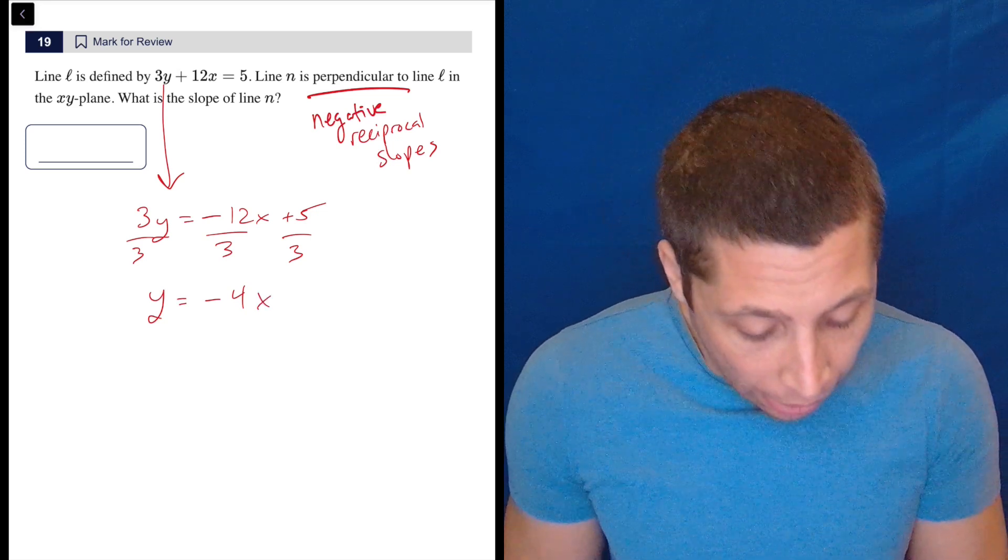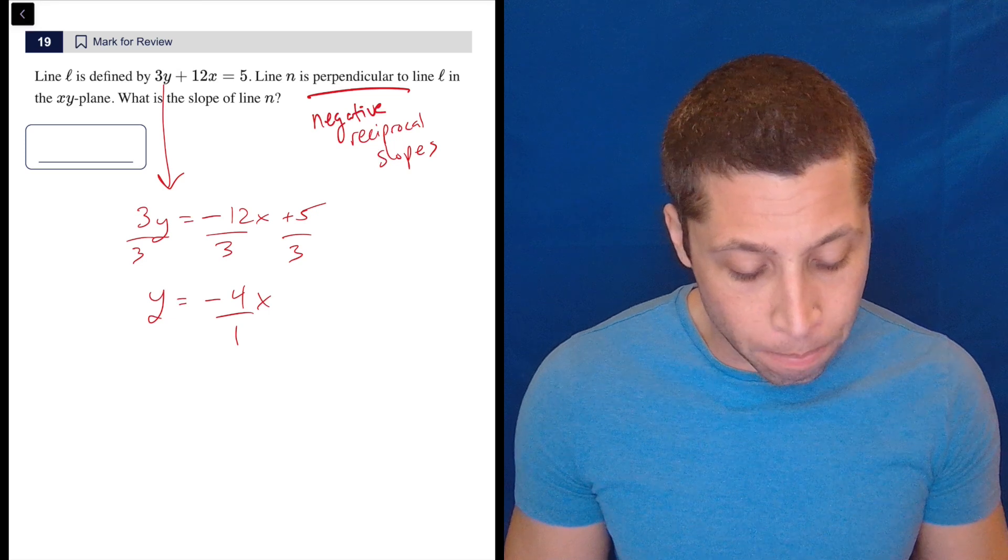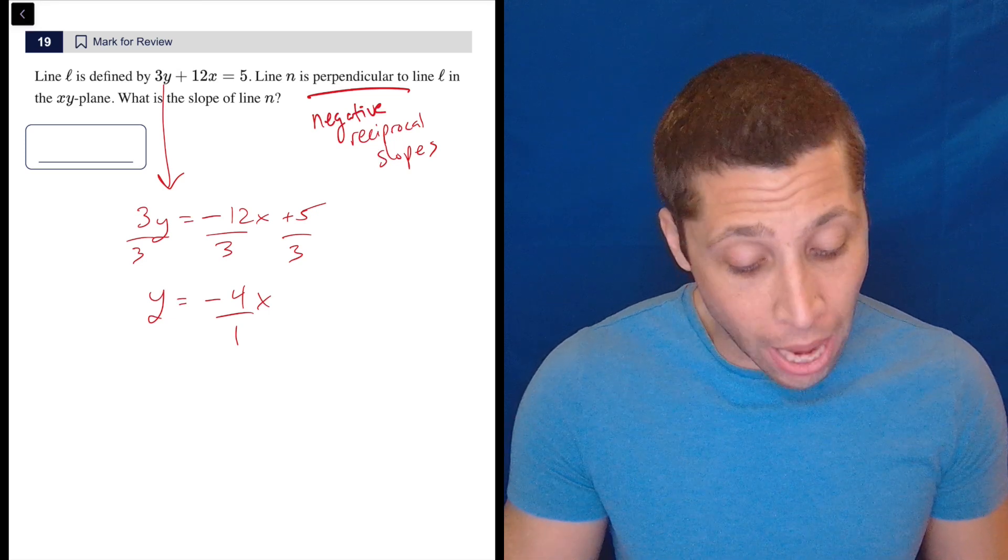Or just to be kind of thorough about it, technically it's negative 4 over 1, which is going to help us when we get to the negative reciprocal slopes. So that is the slope of line L.